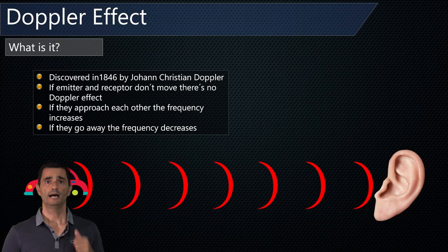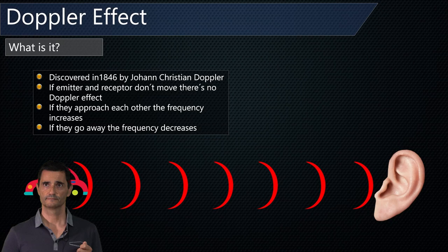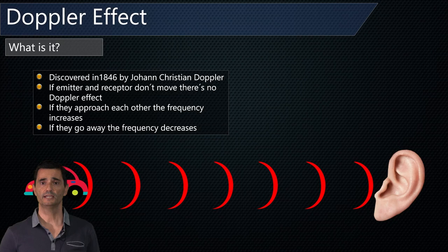Let's take a look at this classic example of the Doppler effect — a car approaching and going away. Listen. You can see the car approaching, so the frequency is increasing, and then it goes away and the frequency decreases. This is the classic example of the Doppler effect.